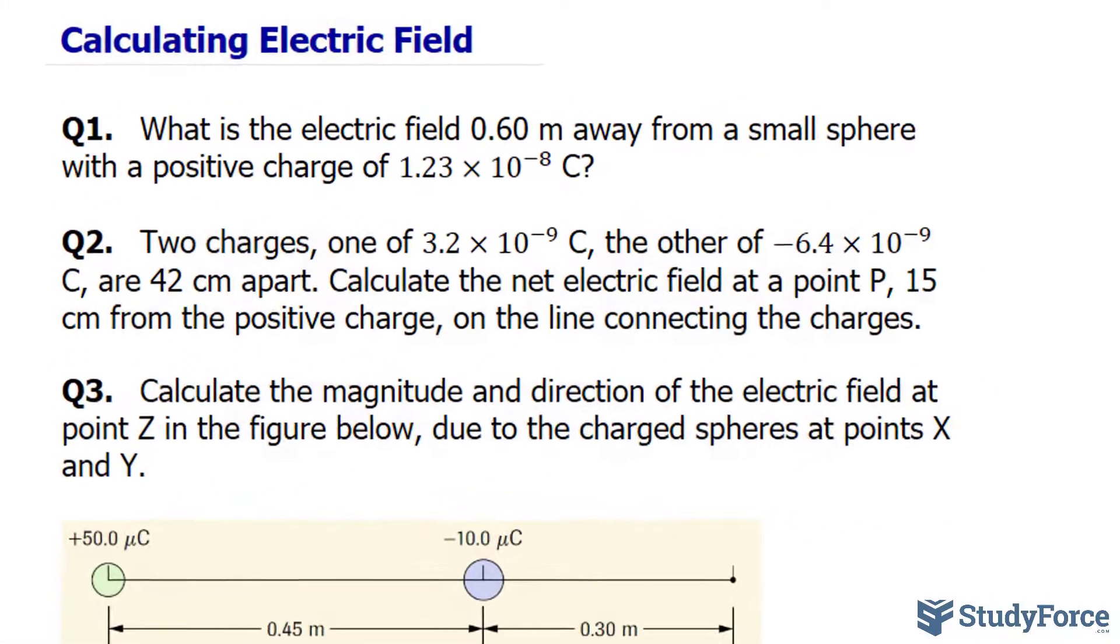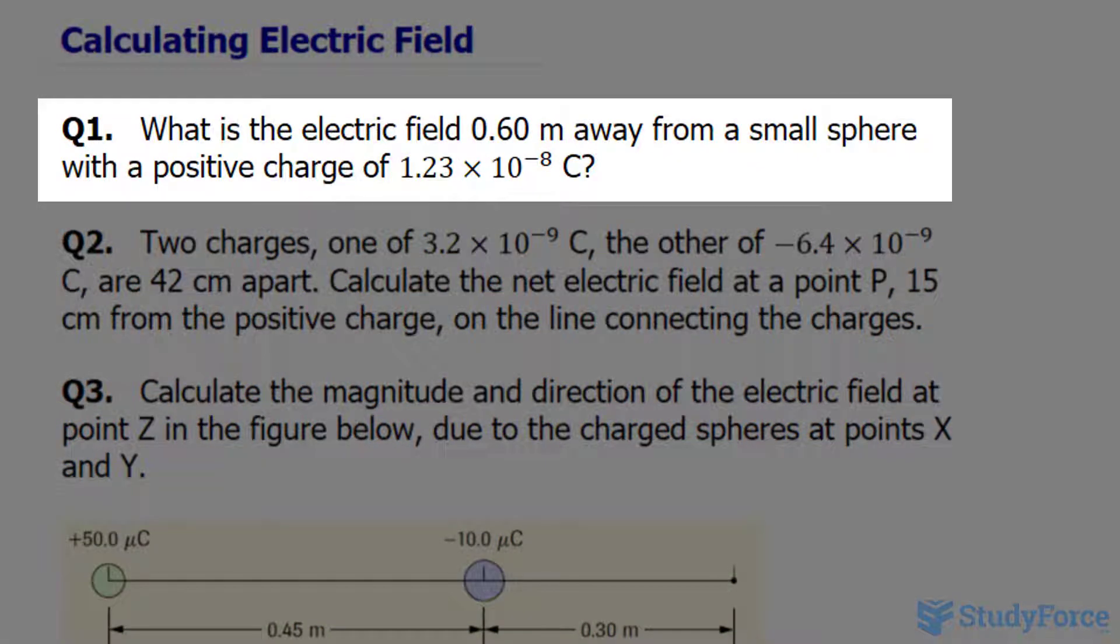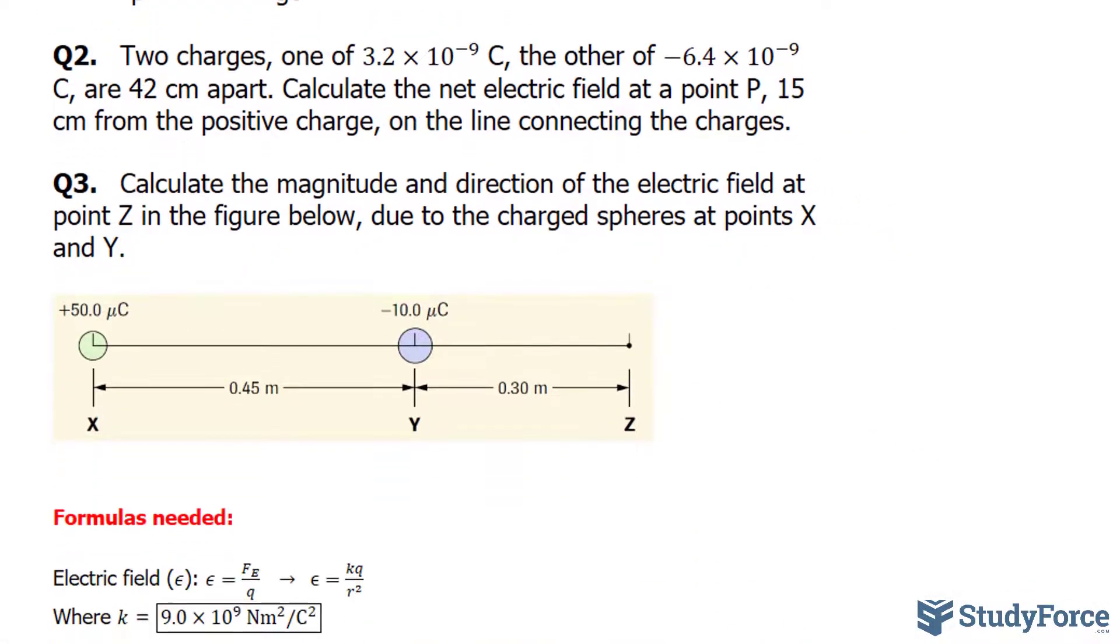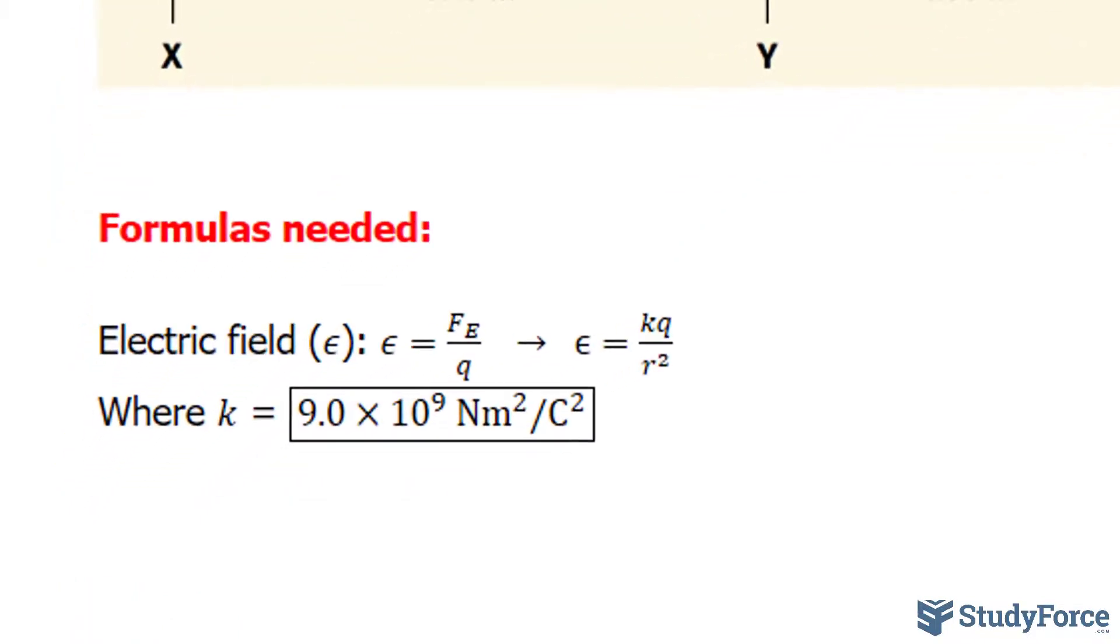The first of three questions asks, what is the electric field 0.6 meters away from a small sphere with a positive charge of 1.23 times 10 to the power of negative 8 coulombs? To calculate the electric field, you will need the following formula, where the magnitude of the electric field, represented by this Greek letter epsilon, is equal to a constant k times the charge q divided by the distance raised to the power of 2, represented by the letter r.